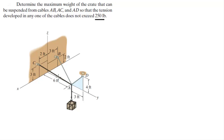To do this vector problem, the first thing I like to do is find all the unit vectors — the unit vector pointing towards D, the unit vector pointing towards B, the unit vector pointing towards C, and the unit vector going straight down holding the crate. So the first step is: find all the unit vectors.